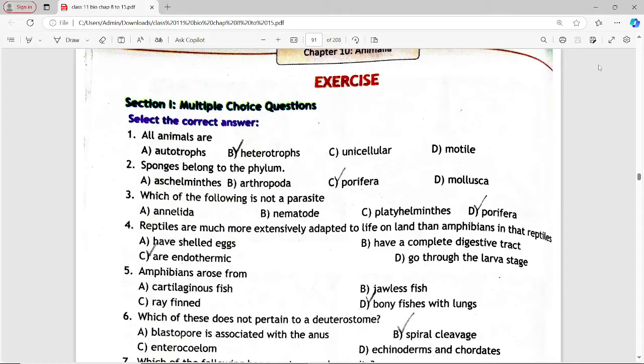Next is: amphibians arose from. Options are cartilaginous fish, jawless fish, ray-finned, bony fishes with lungs. Answer is option D, bony fishes with lungs.